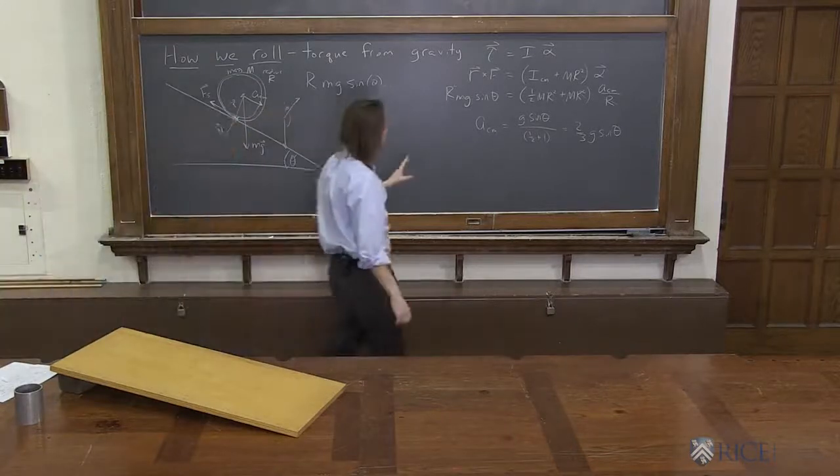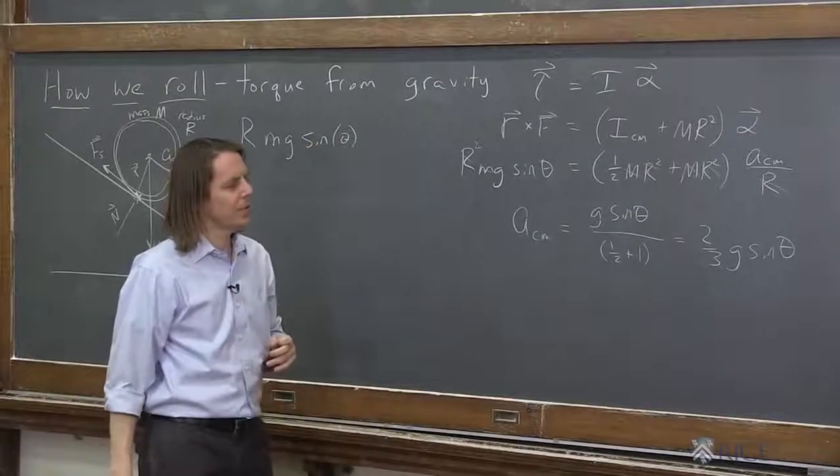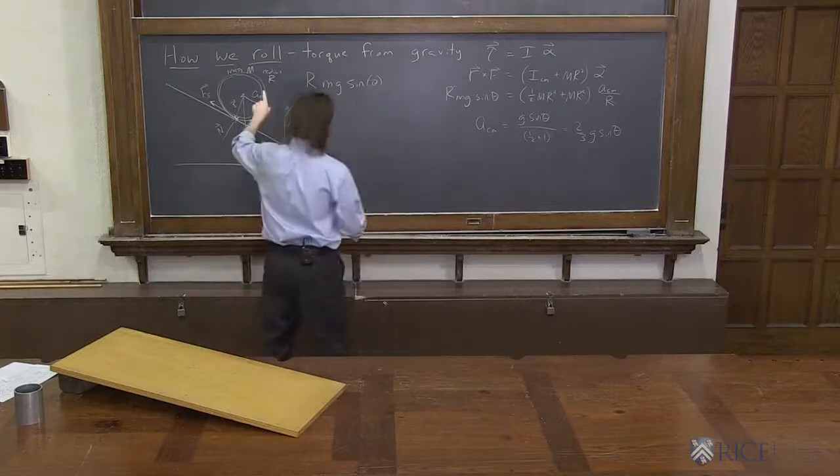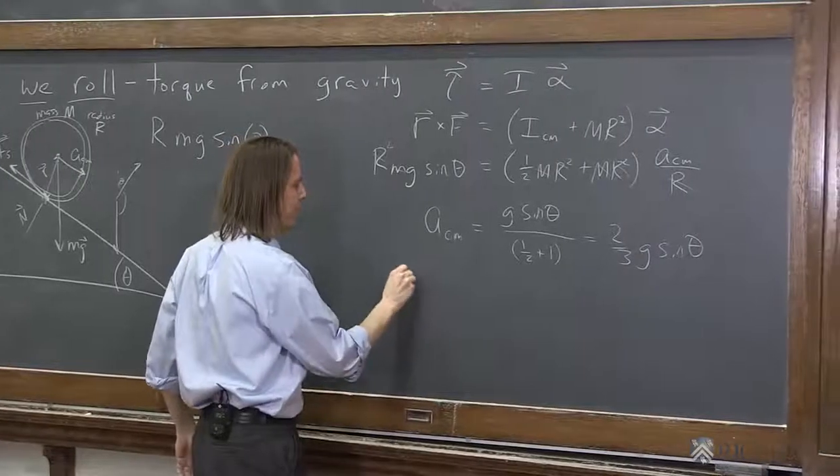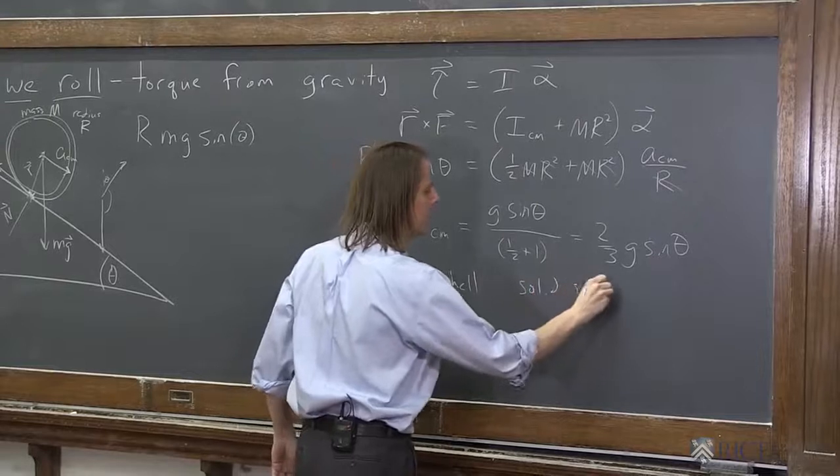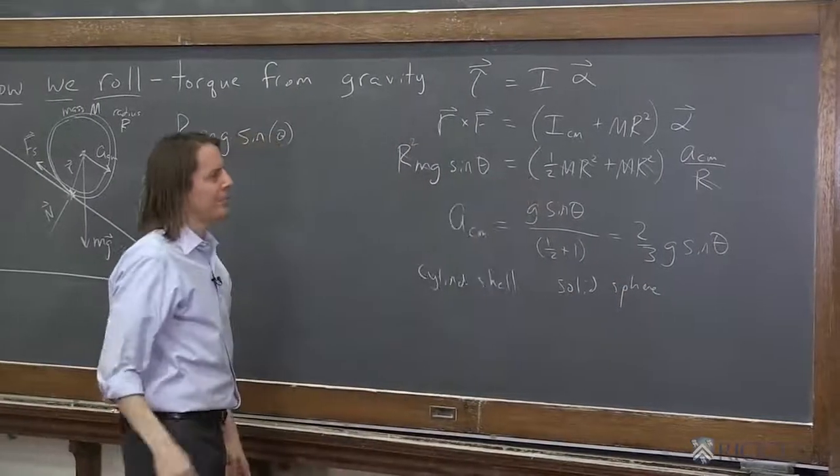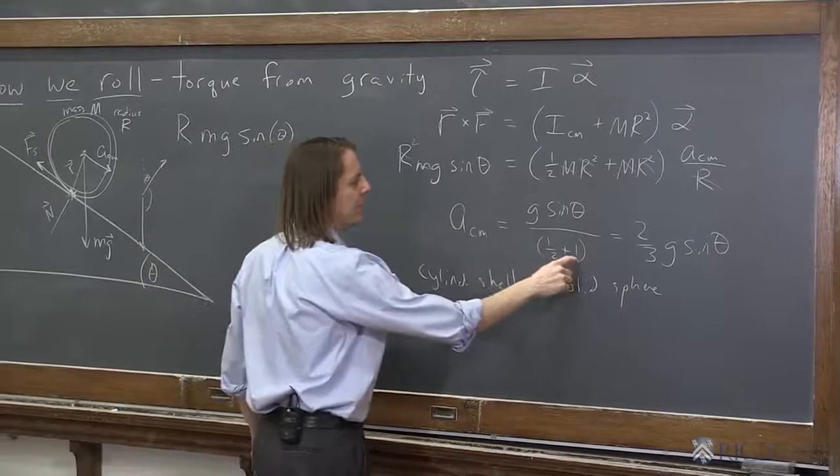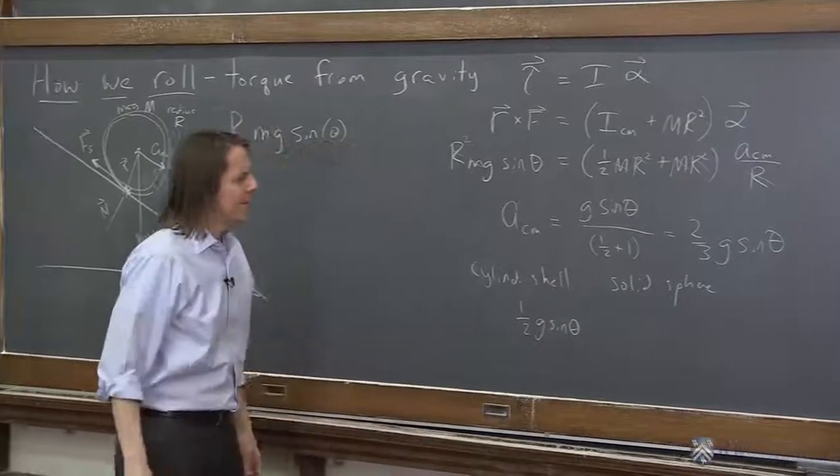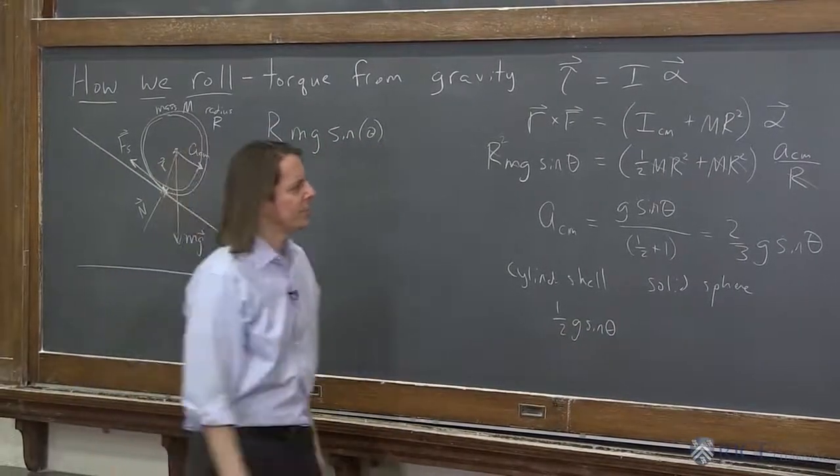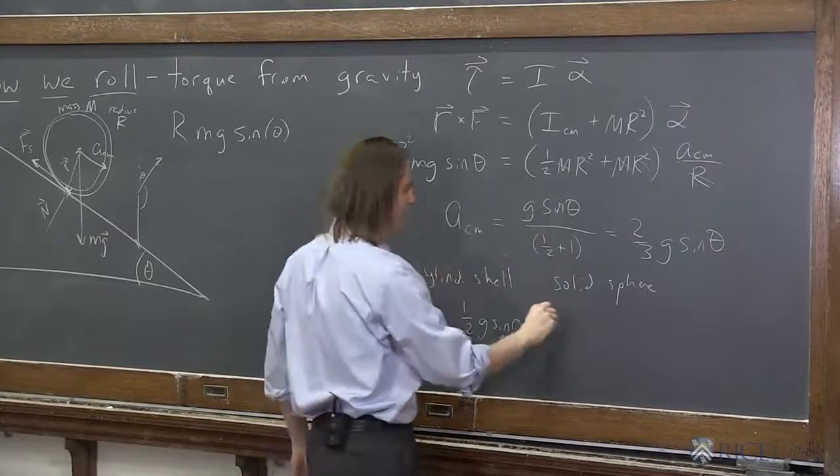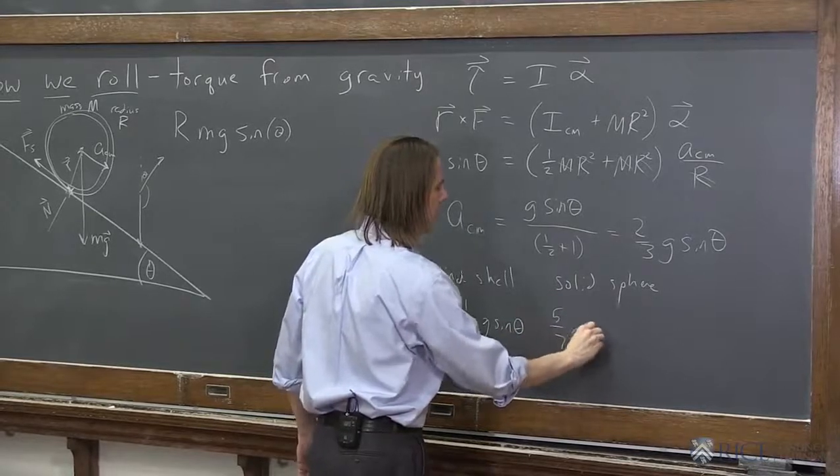You can even use this kind of calculation to figure out who's going to go down the fastest. So I think my last two here, yes, my last two are a cylindrical shell and a solid sphere. And we can just plug in here and see what's going to happen. Cylindrical shell, we already talked about. This would be one plus one is two, so it's one-half g sine theta. And the sphere, we said, was two-fifths, so two-fifths is seven-fifths. So flip it over, five-sevenths g sine theta. So you can see the sphere should go faster, right?